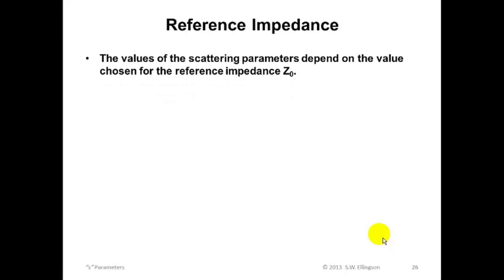So we should say a few more things about this reference impedance. Let this be very clear. The values of the scattering parameters depend on the value chosen for the reference impedance Z0. That means that there are, in fact, not just one set of S-parameters you can define for a 2-port. But there are an infinite number of S-parameter values that you can define for a 2-port, because there's an infinite number of reference impedances that you can imagine using.